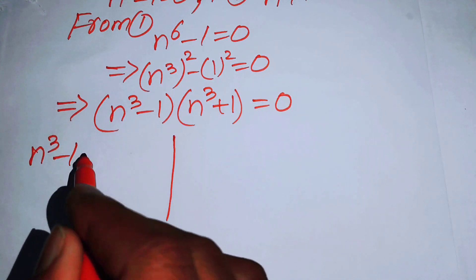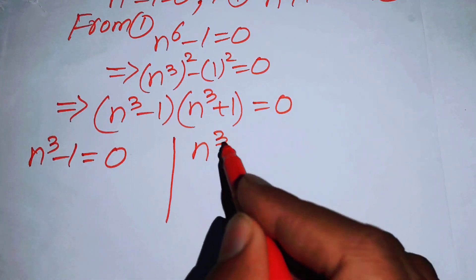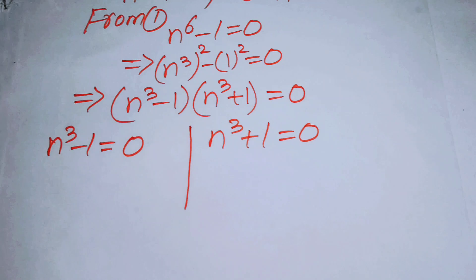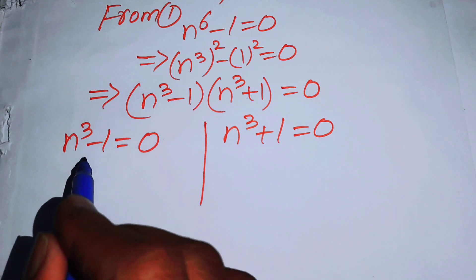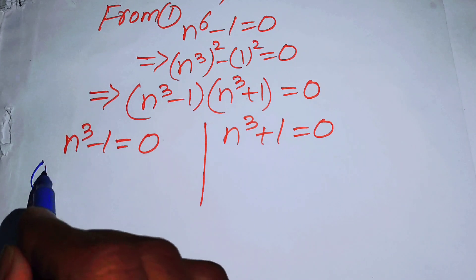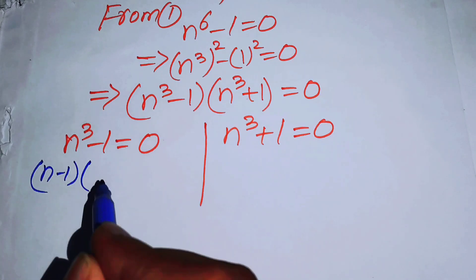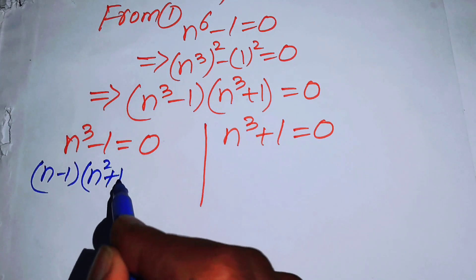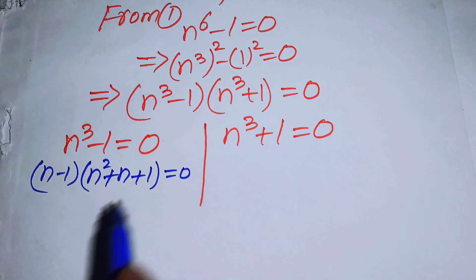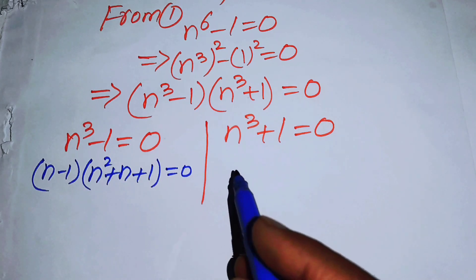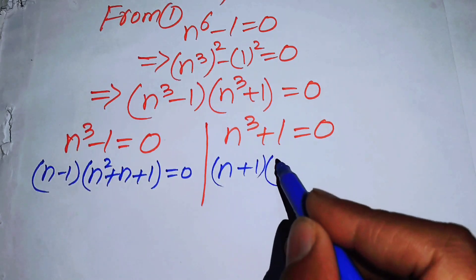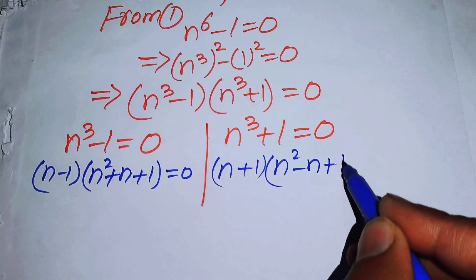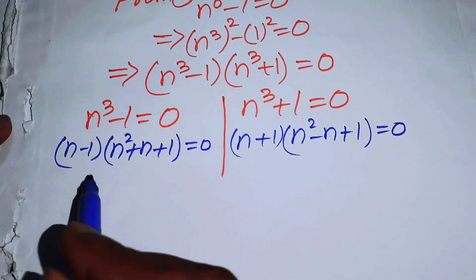We divide this into two sub-cases: n^3 - 1 = 0 and n^3 + 1 = 0. Applying the sum and difference of cubes formulas, we get (n - 1)(n^2 + n + 1) = 0 and (n + 1)(n^2 - n + 1) = 0.